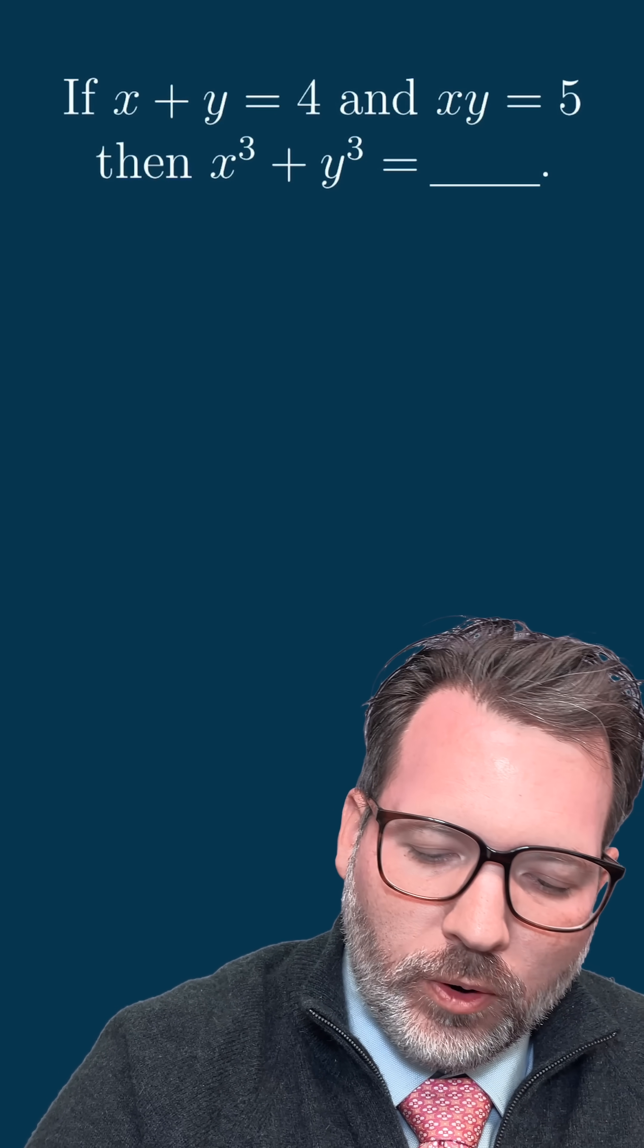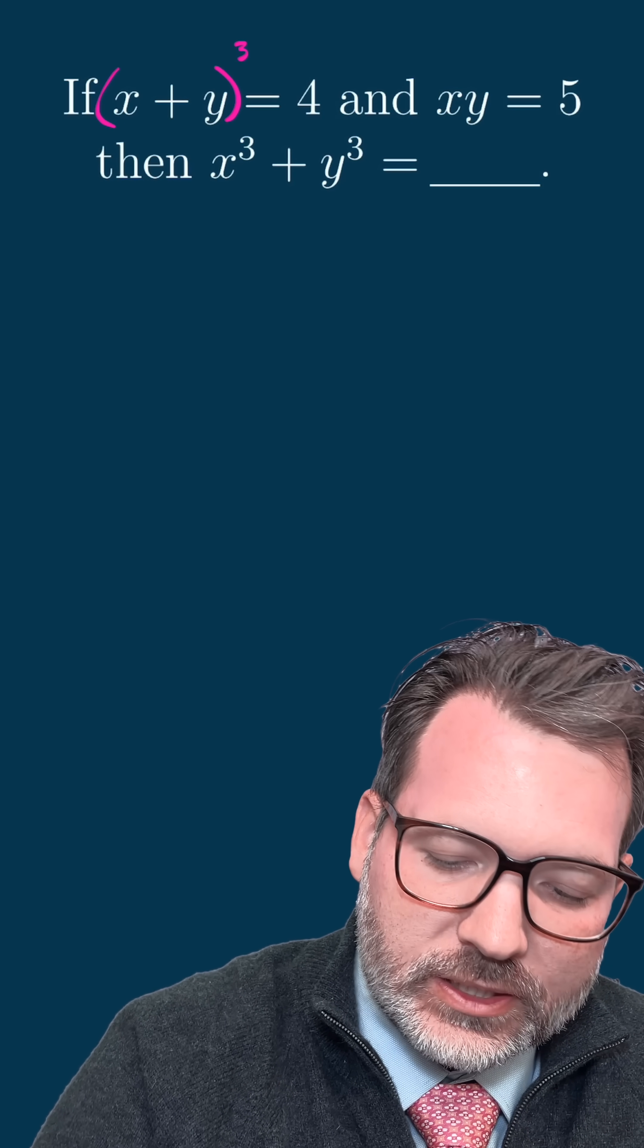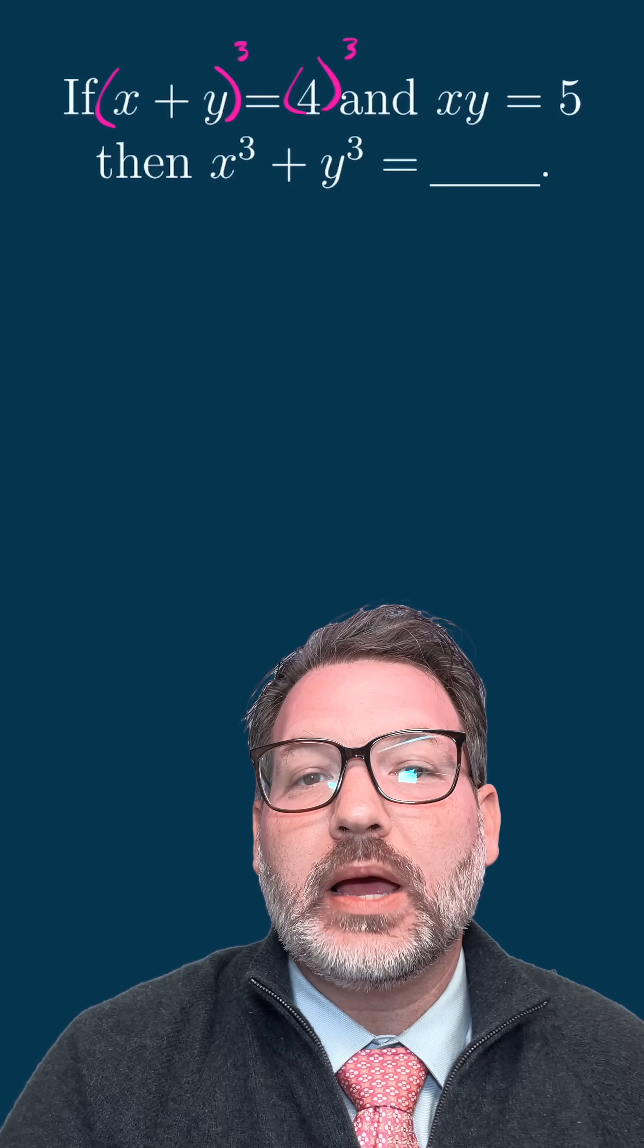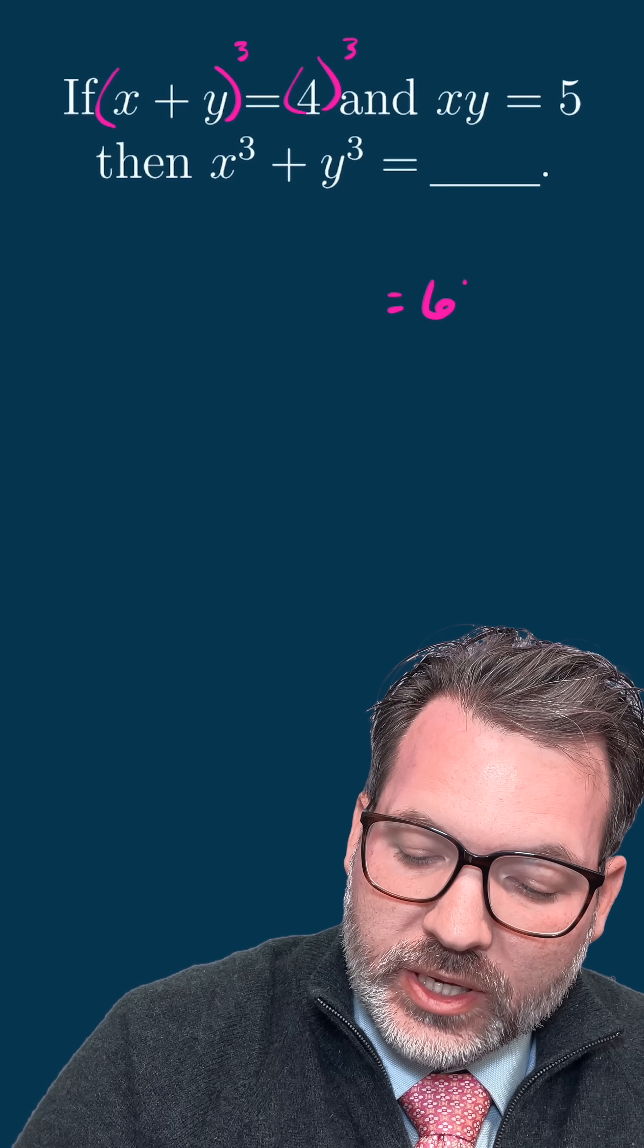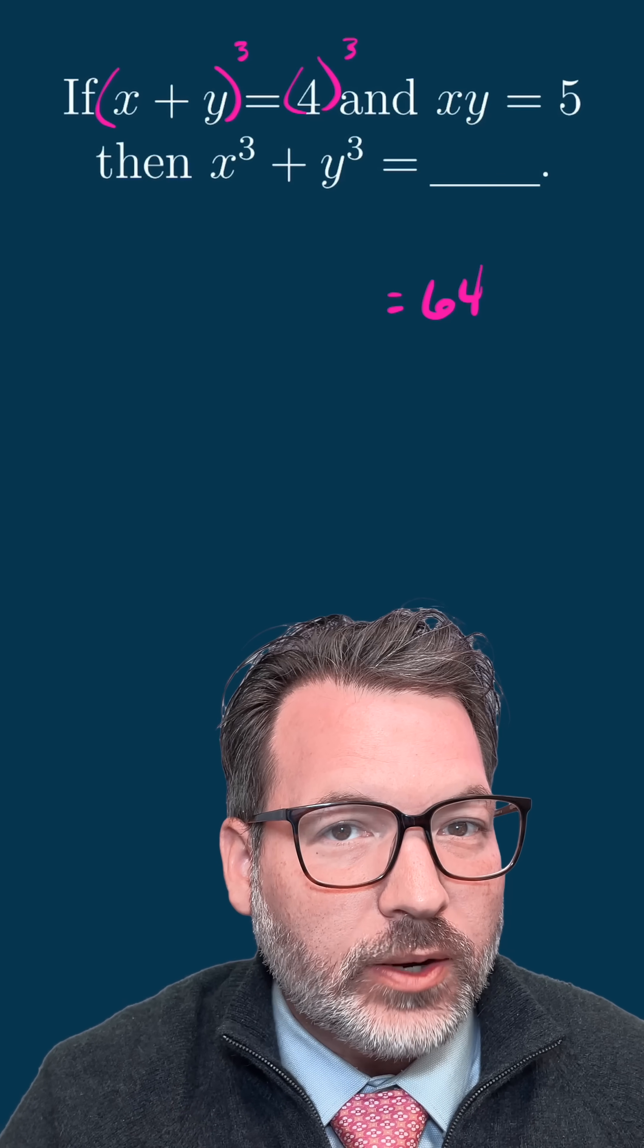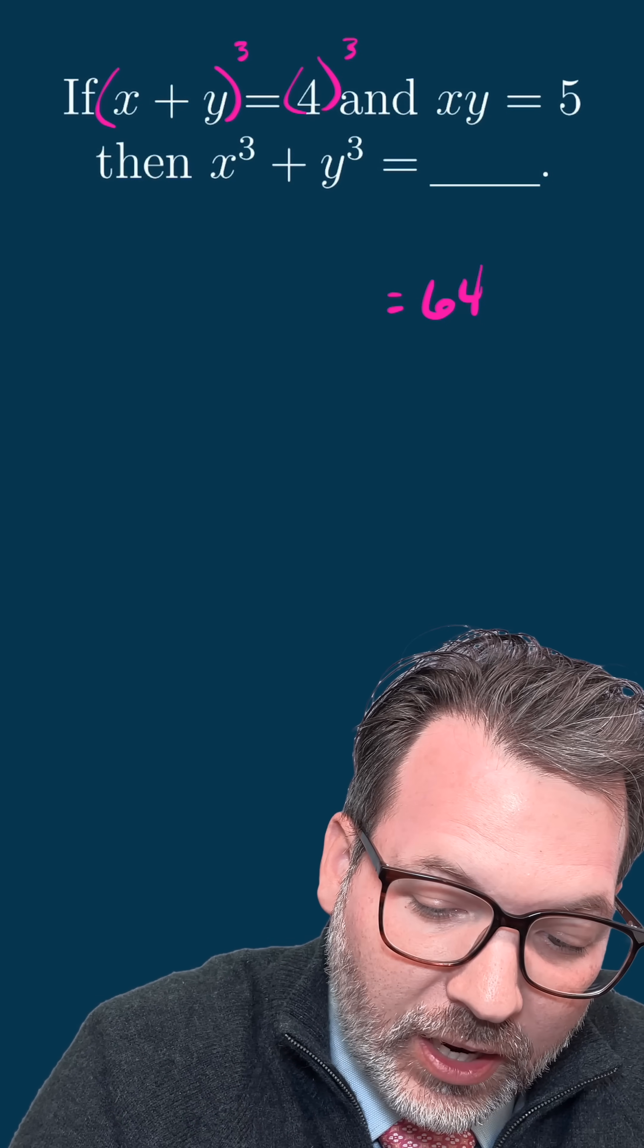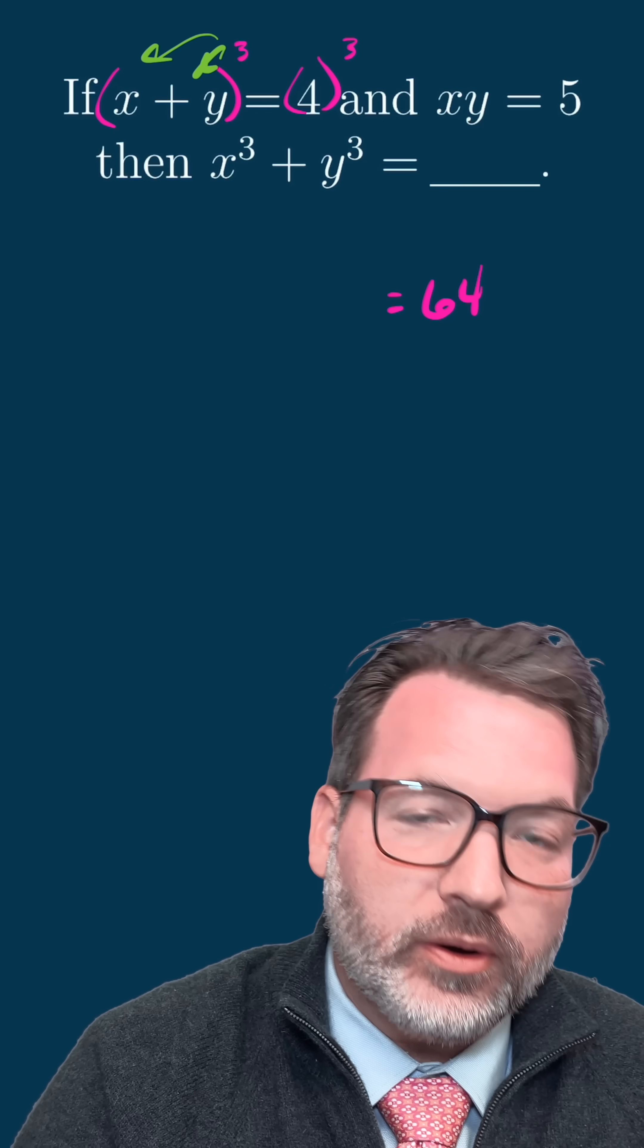If I know that x plus y is four, and what I'm looking for is x cubed plus y cubed, one thing I might try here is just cubing both sides of that equation. On the right, four cubed is 64, and on the left, I want to be careful about this, I cannot simply distribute this power of three and say x cubed plus y cubed is 64.